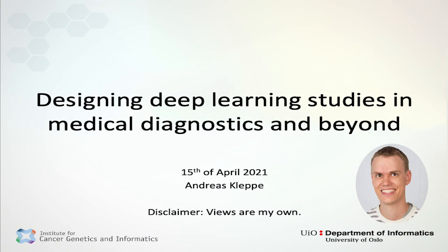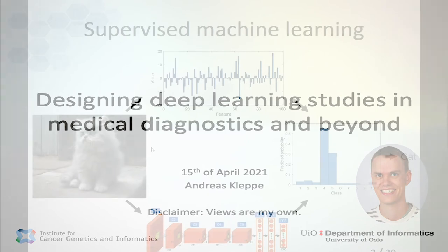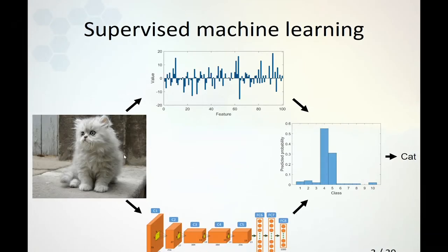This trend towards becoming more and more reliant on training data means that trained systems will have an increasing possibility to adapt to the training data and find good correlations between the input and output, while not generalizing as well to new samples. So the capacity increases, but that also increases the issue of overfitting to the training data.